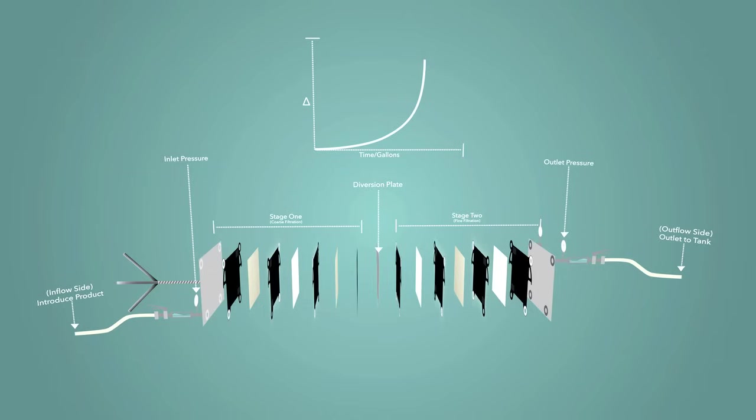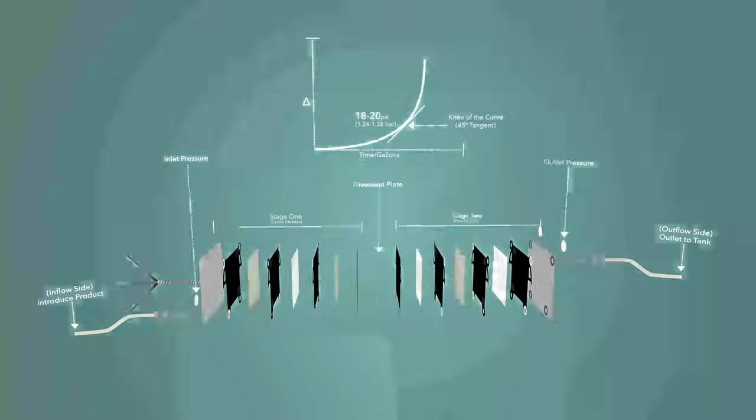If regeneration of media is desired, such regeneration should be done prior to the knee of the curve, or 45-degree tangent. This is typically occurring in wine, beer, and distillate filtration at around 18-20 psi differential pressure.